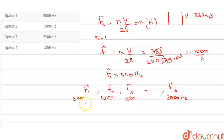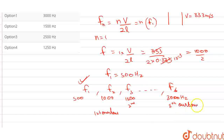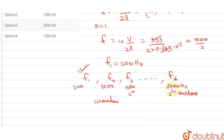Now if we talk about overtones — this was our fundamental frequency. The next resonating frequency is F2, which is the first overtone. This is our second overtone. Similarly, the 2nd overtone is the 4th harmonic, the 3rd overtone is the 5th, the 4th overtone is the 6th. So the 5th overtone corresponds to F6, which is 3000 Hz.